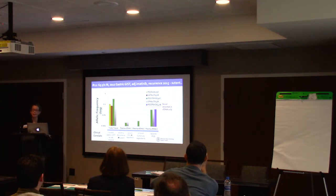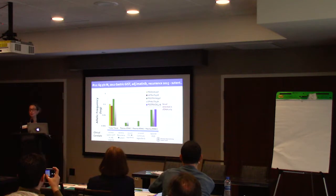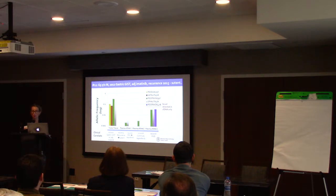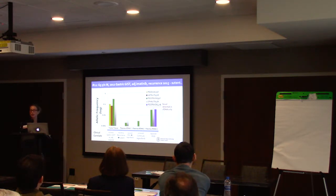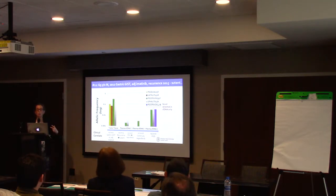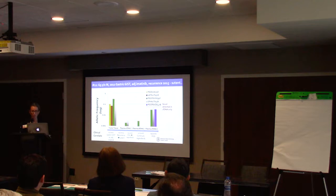ctDNA, collected from blood, has the potential to capture all of these resistant clones. This case reflects a patient with gastric GIST treated with imatinib who developed recurrence after three years, then went on sunitinib followed by regorafenib. Baseline tumor tissue by next-generation sequencing identified a dominant PDGFRA exon 14 mutation, and at the time of progression on regorafenib, ctDNA revealed the emergence of a new resistant mutation in PDGFRA exon 18 — showing ctDNA's ability to capture resistant mutations as a discovery tool.